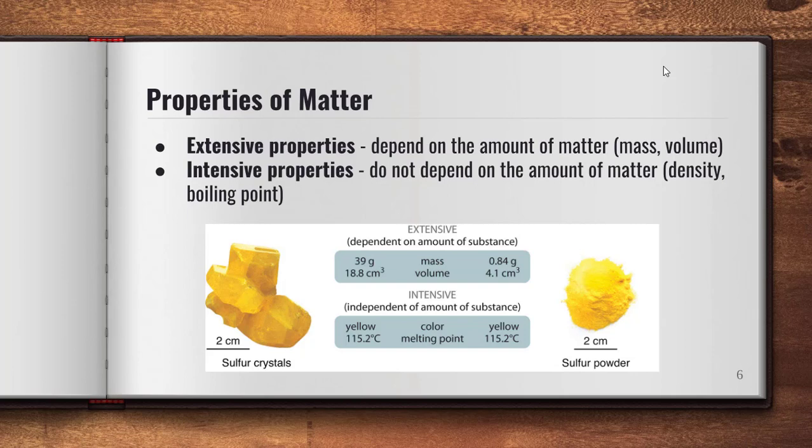When talking about properties of matter, we categorize them into two types: extensive properties and intensive properties. Extensive properties depend on the amount of matter — they change based on how much matter you have. Mass and volume are examples: the more sulfur crystals you have, the more mass and the more volume — the more space — they take up.